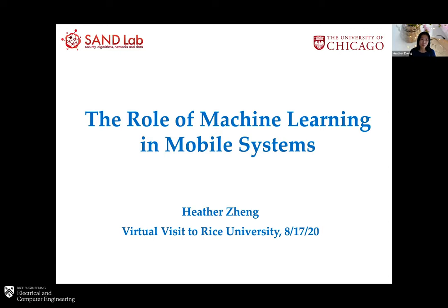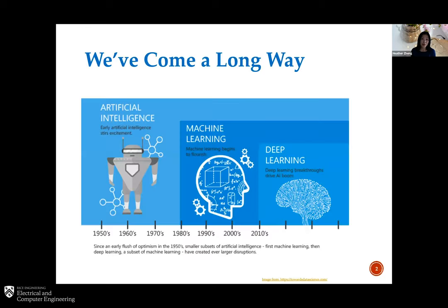I'm going to talk about my experience applying machine learning to mobile system design, and very recent work on adversarial machine learning as well. Many of you may have seen this picture — one of the hottest topics in research these days is machine learning. It took many years starting from the 1950s, and then on to 2008 where deep learning started to move in and revolutionize entire fields.